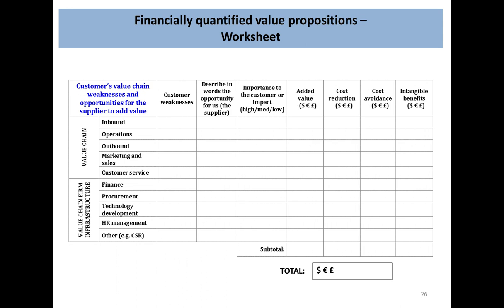On the next slide, we've taken those value chain items — inbound, operations, outbound — and described what the customer weaknesses might be, then the opportunity for the customer, categorised as high, medium, or low, and finally adding some value: will it increase revenue, or reduce costs? If you go back and talk to existing customers about your products and services delivered, they're often very helpful in filling these things in, and you can put together case studies with them before working with new customers.